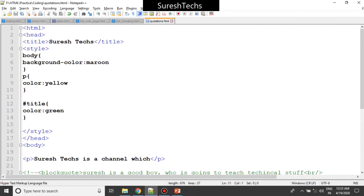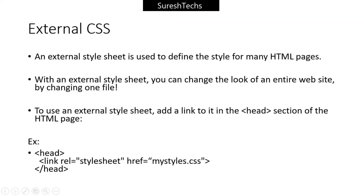The final type is external style sheets. External style sheets are used to provide the style for many HTML pages. Consider your application has 100 HTML pages - an external style sheet will be very beneficial. To use it, you create a separate file with a CSS extension, and then reference it using a link element. You provide the relation as 'stylesheet' and then provide the reference path to the external CSS page.